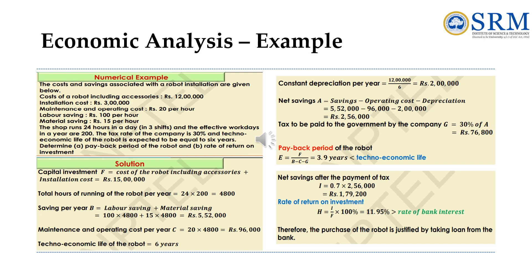Capital investment F = cost of robot including accessories + installation cost = ₹12 lakhs + ₹3 lakhs = ₹15 lakhs. Total hours of running per year = 24 hours/day × 200 working days = 4,800 hours. Savings per year (B) = labor saving + material saving = (₹100 × 4,800) + (₹15 × 4,800) = ₹5,52,000. Maintenance and operating cost per year (C) = ₹20 × 4,800 = ₹96,000. Techno-economic life = 6 years.